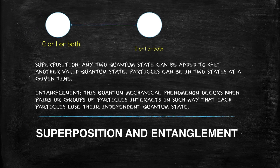In superposition, any two quantum states can be added to get another valid quantum state. Particles can be in two states at a given time. So in quantum computing, at any point in time, a unit can be either zero, or one, or both simultaneously — which is not possible in classical computing. That is where the superposition concept is applied in developing quantum computing.